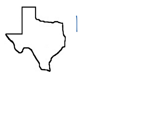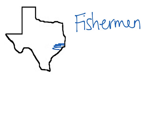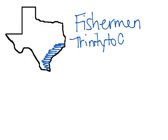The first group we're going to talk about are called the fishermen. They're called fishermen because that's where their main source of diet comes from. They're going to be all through this general area along the Gulf Coast, from the Trinity River all the way to Corpus Christi.